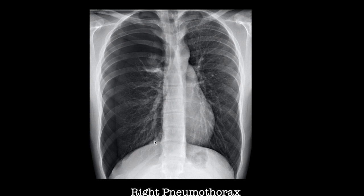Here's another example of pneumothorax. On the left side you can see normal lung markings going all the way out to a centimeter from the inner chest wall. But here the lung markings stop, you see an edge, and then air on the outside — so this is air in the pleural cavity. This is another pneumothorax. In this case, there is no midline shift, so this is a simple pneumothorax.